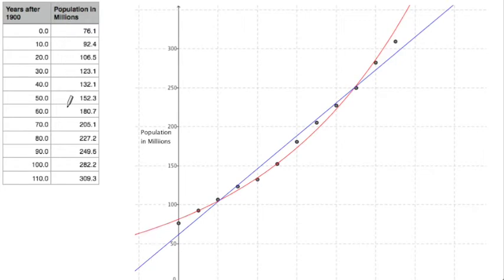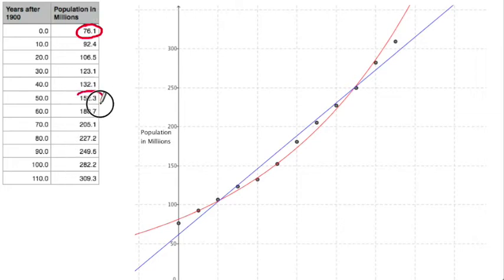I'm going to go through the list and look for a possible doubling effect. Starting with the smallest number, 76.1 — I'll put that in my calculator and double it. So I'm looking for about 152.2. And amazingly, that's really close: 152.3.